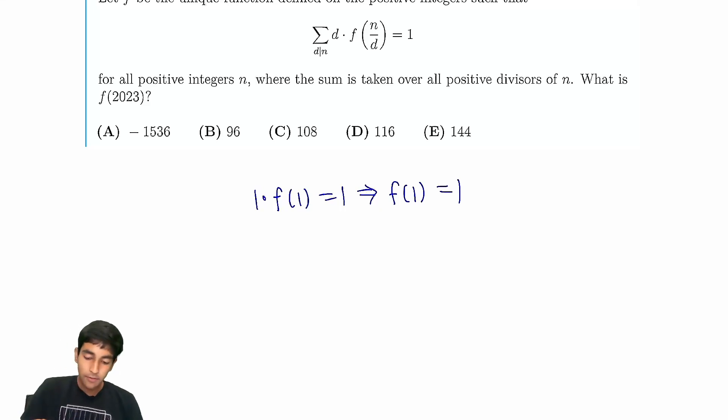Okay, now what happens if n is a prime? We have 1 times f of prime plus prime times f of 1. What is f of prime? Well, that's what we're trying to find. So take a look here. This is 1. So we have f of prime, and we know f of 1 is 1. So this is 1 minus p.